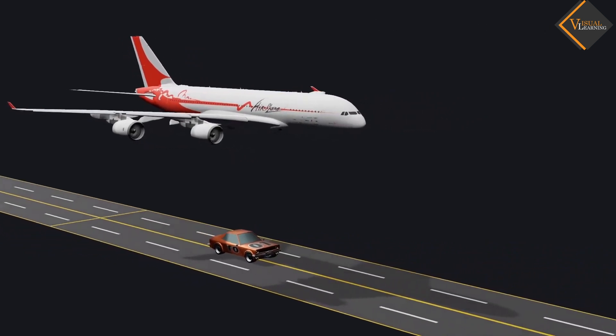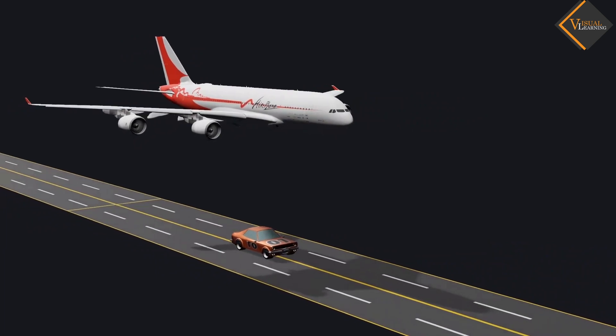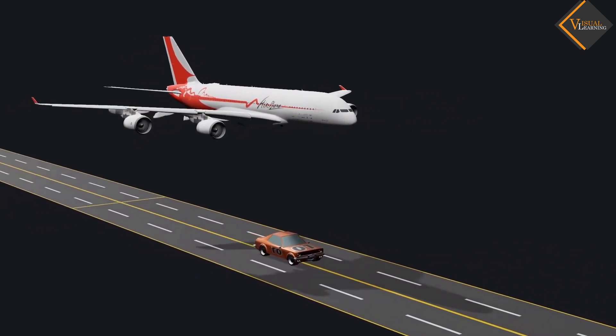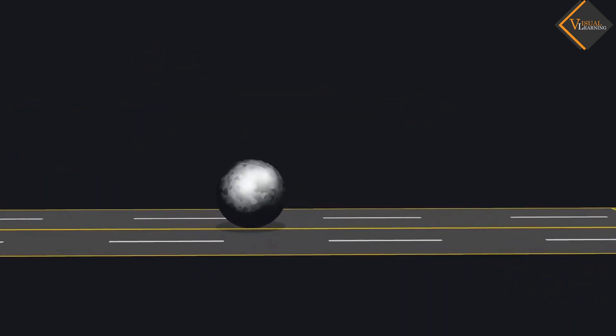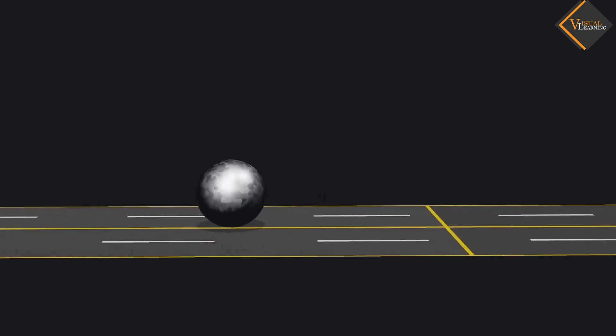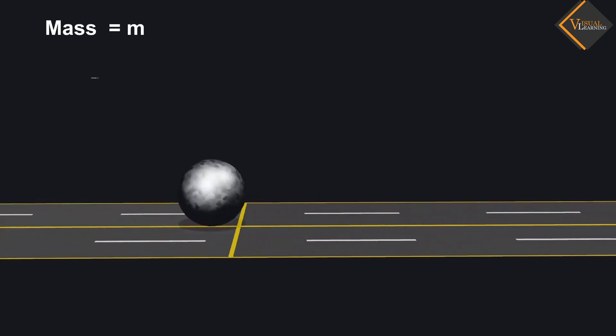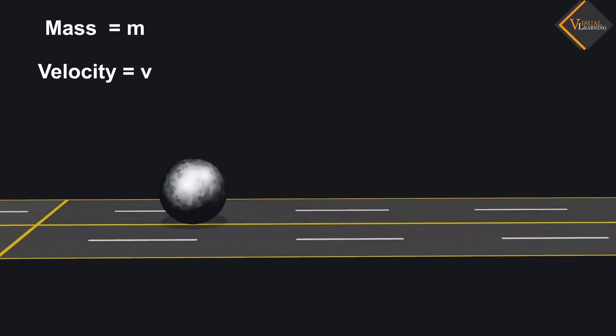To understand kinetic energy, let us take a simple example. Let us consider a heavy ball. This ball has mass m and it's moving with some velocity, say velocity v.